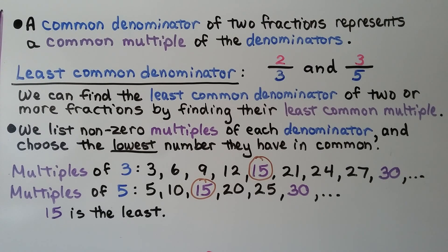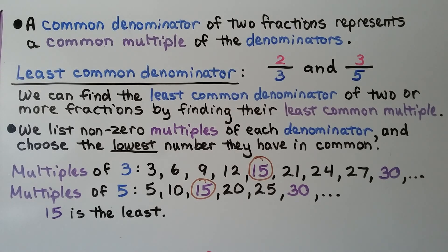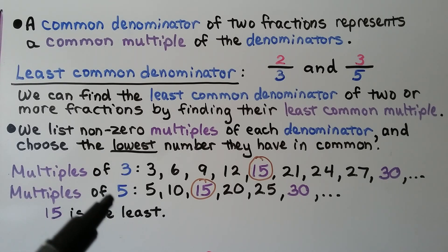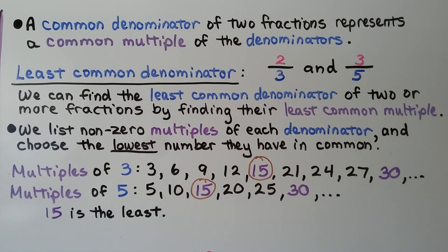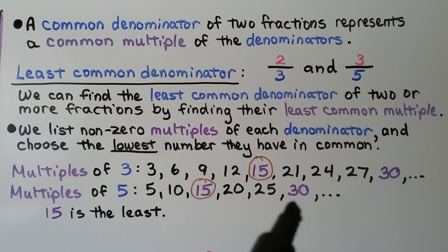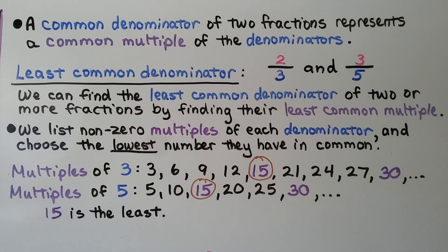A common denominator of 2 fractions represents a common multiple of the denominators. We have 2/3 and 3/5. The least common denominator — we can find it by finding the least common multiple. We list non-zero multiples of each denominator, 3 and 5, and choose the lowest number they have in common. The multiples of 3 has a 15 and the multiples of 5 has a 15. They also have a 30, but that won't be the least number in common. The least would be 15, which is the least common denominator for 2/3 and 3/5.